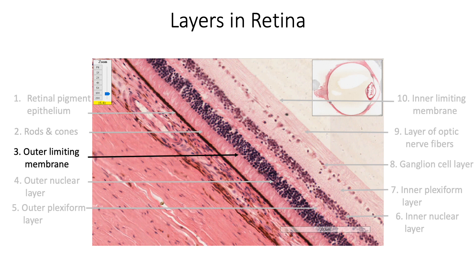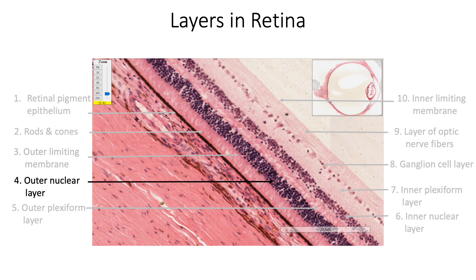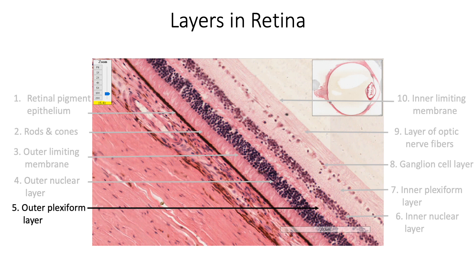The outer limiting membrane is formed by the apical processes of Müller cells. The outer nuclear layer contains the cell bodies of retinal rods and cones; nuclei of cones are larger and lightly stained compared to the nuclei of rods. The outer plexiform layer contains processes of rods and cones synapsing with processes of bipolar cells, along with processes of horizontal cells and interplexiform cells. Many photoreceptor cells converge on a single bipolar cell, but in the case of the fovea, one cone synapses with one bipolar cell.